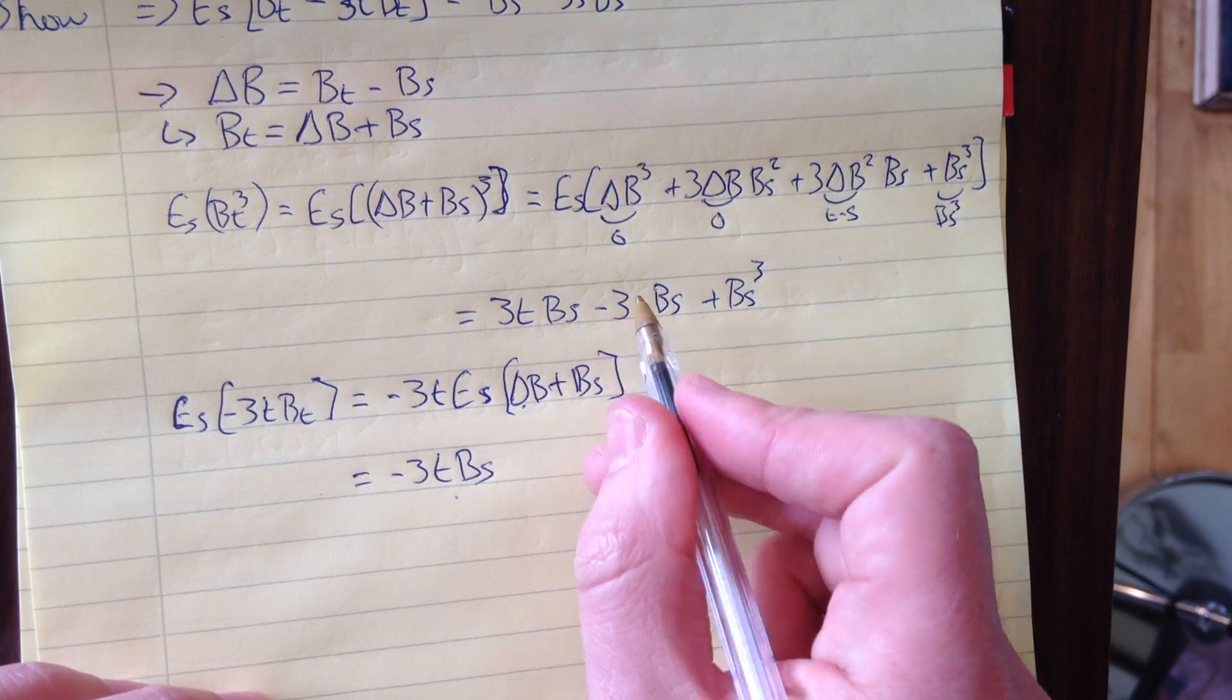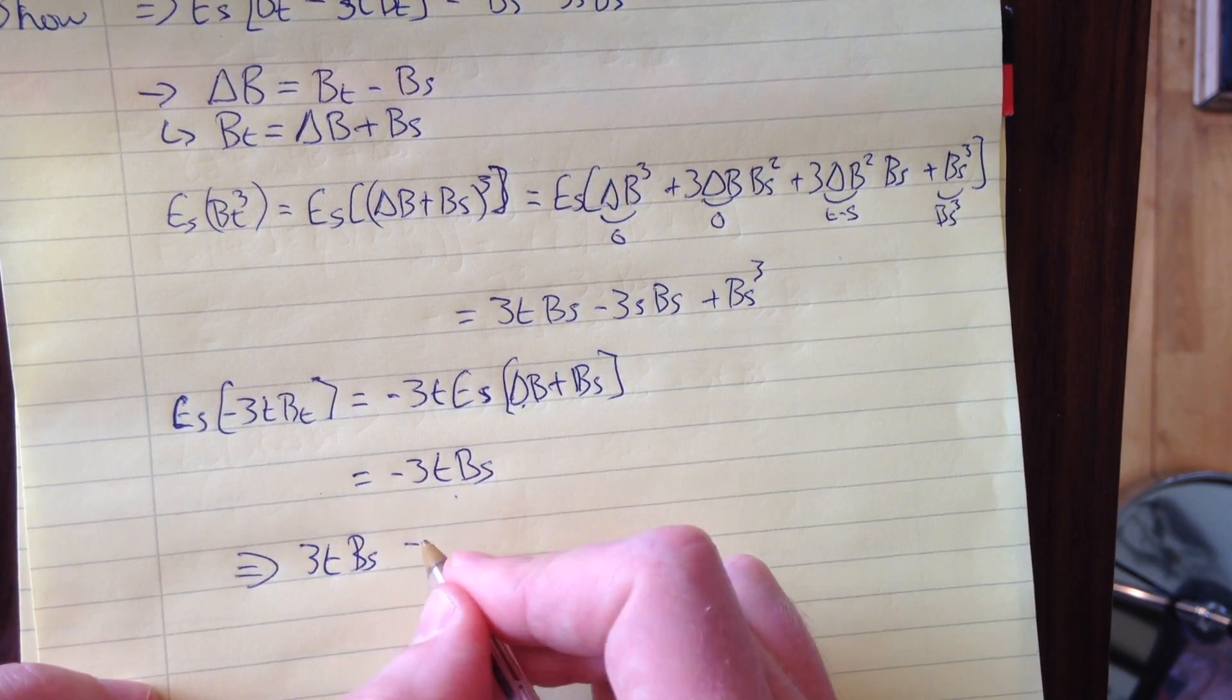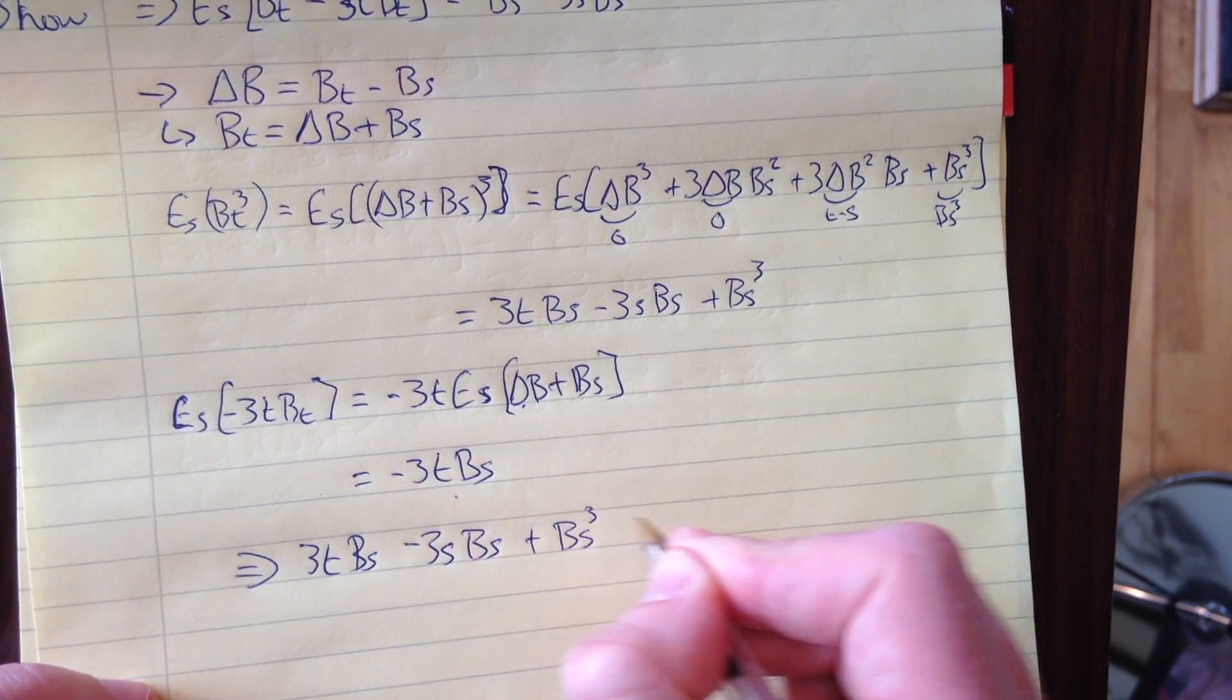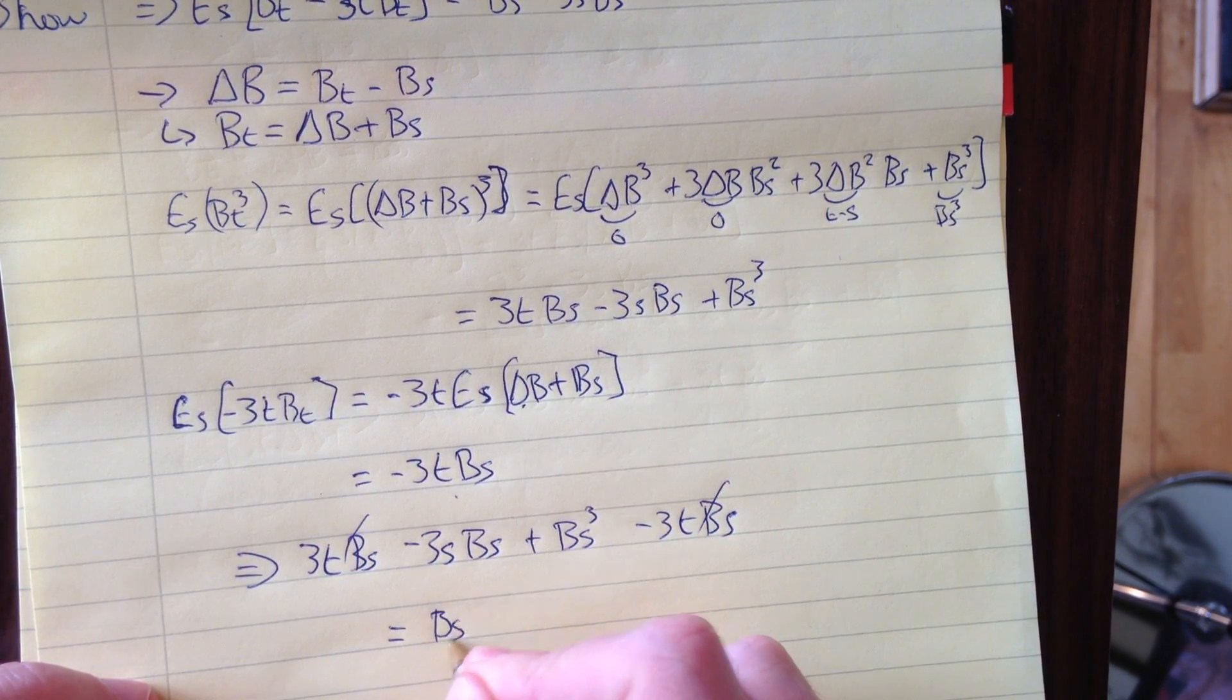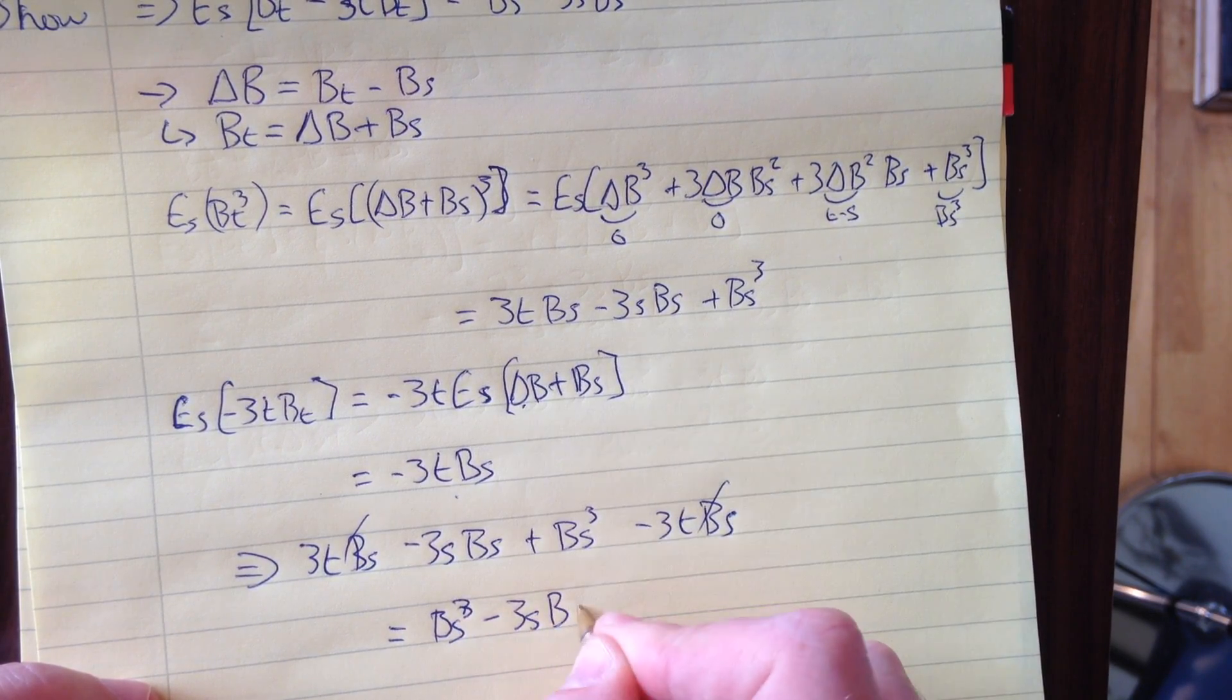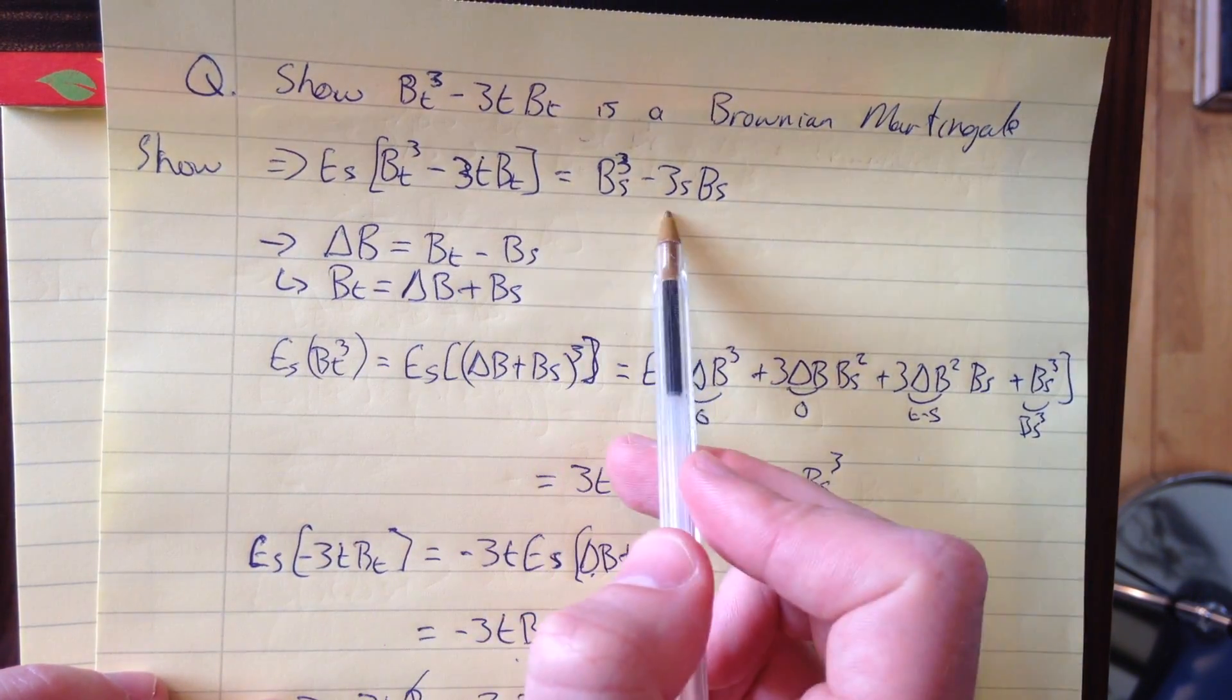Putting this together, we get 3TB_s - 3SB_s + B_s^3 - 3TB_s. These cancel, and we're left with B_s^3 - 3SB_s, which is what we wanted to show. This proves it's a Brownian Martingale.